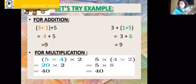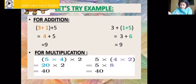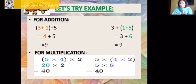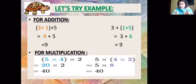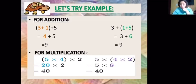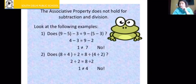Now check for multiplication: 5 multiplied by 4 multiplied by 2. Grouping 5 and 4 first: 5 times 4 is 20, and 20 times 2 is 40. On the right side, grouping 4 and 2 first: 4 times 2 is 8, and 5 times 8 is also 40. It does not matter which pair you multiply first — you get the same answer. So associative property holds for addition and multiplication.